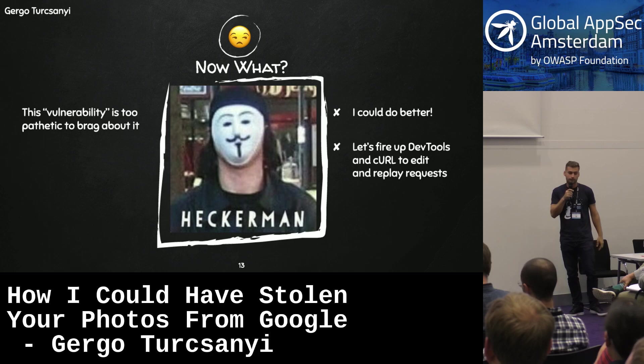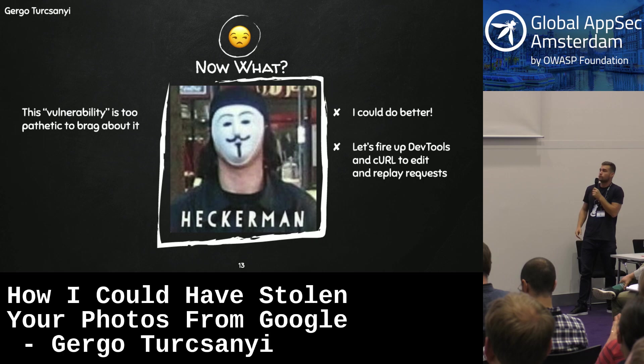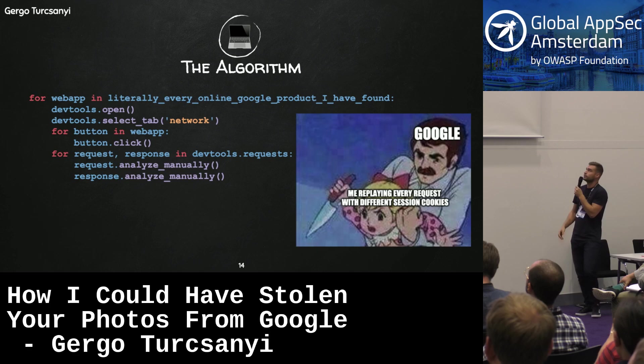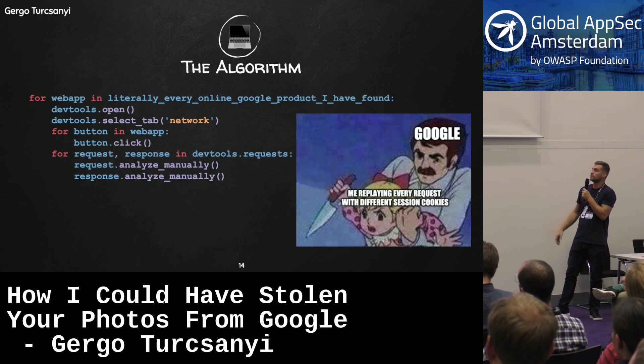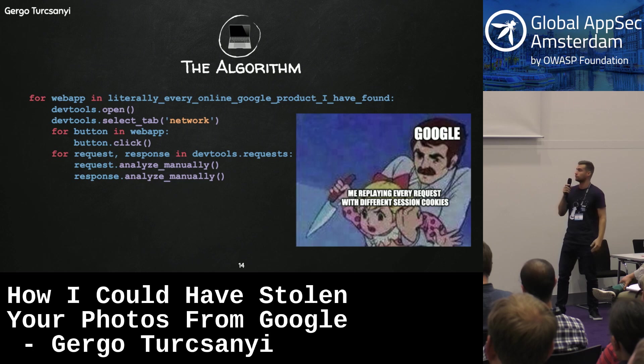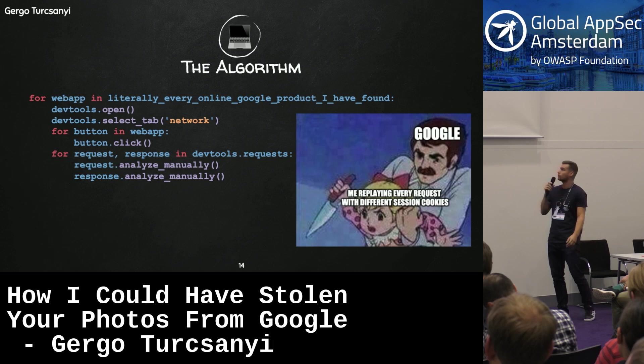First I wanted to understand how Google works under the hood. I made a list of all Google products I found online and opened the developer tools - I really like the Chrome developer tools, especially the network tab. Since I'm usually creating web security challenges, I'm familiar with basic concepts of web like same origin policy, cross origin resource sharing, cross script inclusion, and stuff like that.